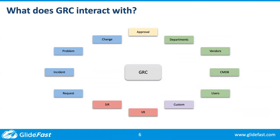Once it's in ServiceNow, there's nothing you cannot get to except for HR. HR with its special security controls is not available to GRC without customization. But departments, vendors, the CMDB, the user table, any custom tables you've built, vulnerability response, security incident response, the request, incident, problem, and change processes and data — all of that is available for GRC to dig into, including all the relationships.